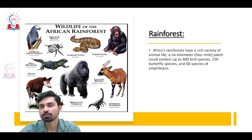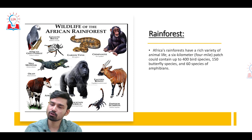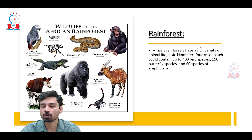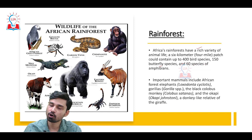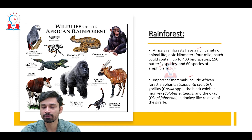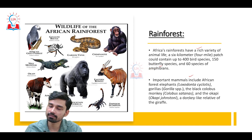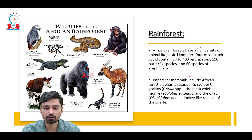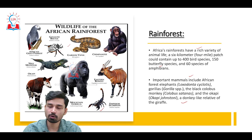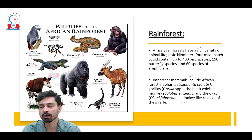The African rainforest also has a very rich variety of animal life. A six-kilometer or four-mile patch can contain up to 400 different bird species, 150 types of butterfly species, and 60 different species of amphibian. Important mammals include the African forest elephant, also called the bush elephant or Loxodonta cyclotis, gorillas, the black colobus monkey, and the okapi — a donkey-like relative of the giraffe. Reptiles such as the gaboon viper, the goliath beetle, scorpions, and most importantly mountain gorillas found in Uganda and Rwanda are among the most unique species of the African rainforest.